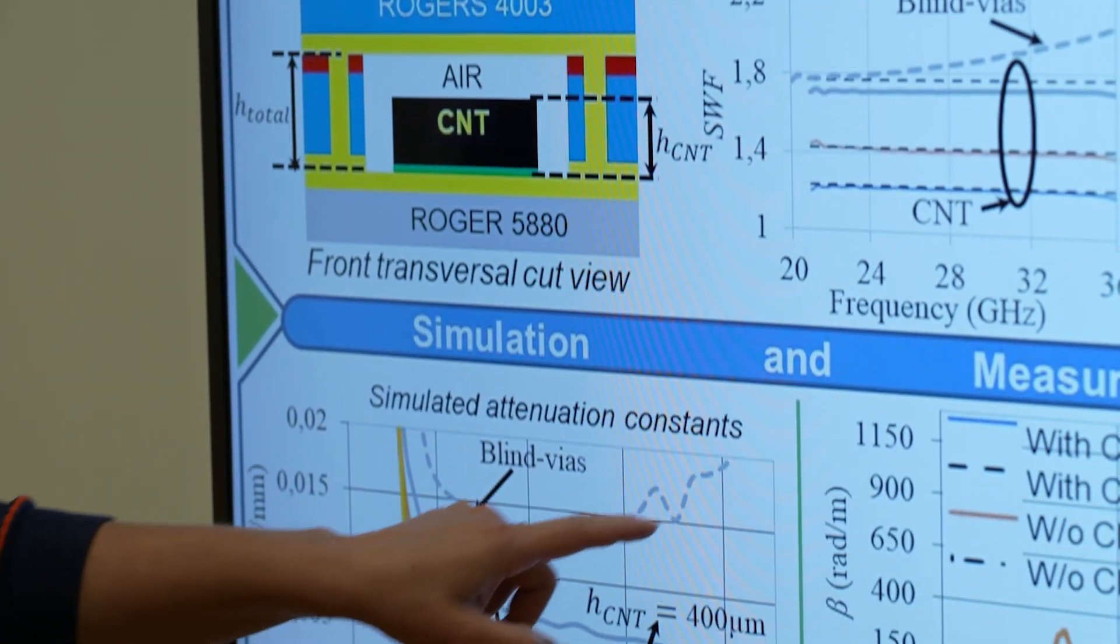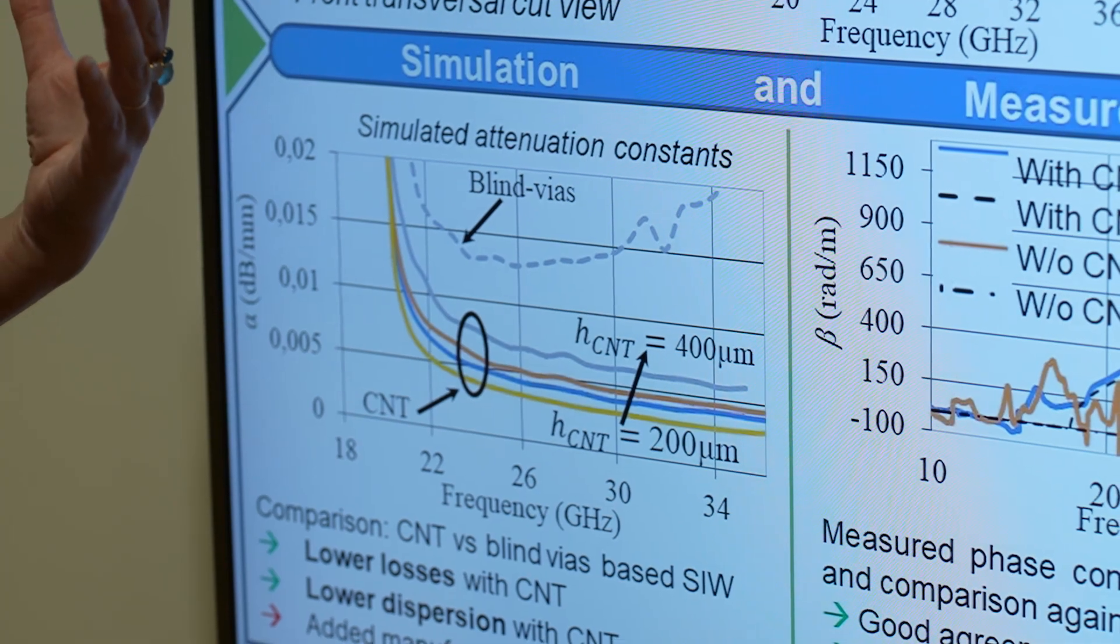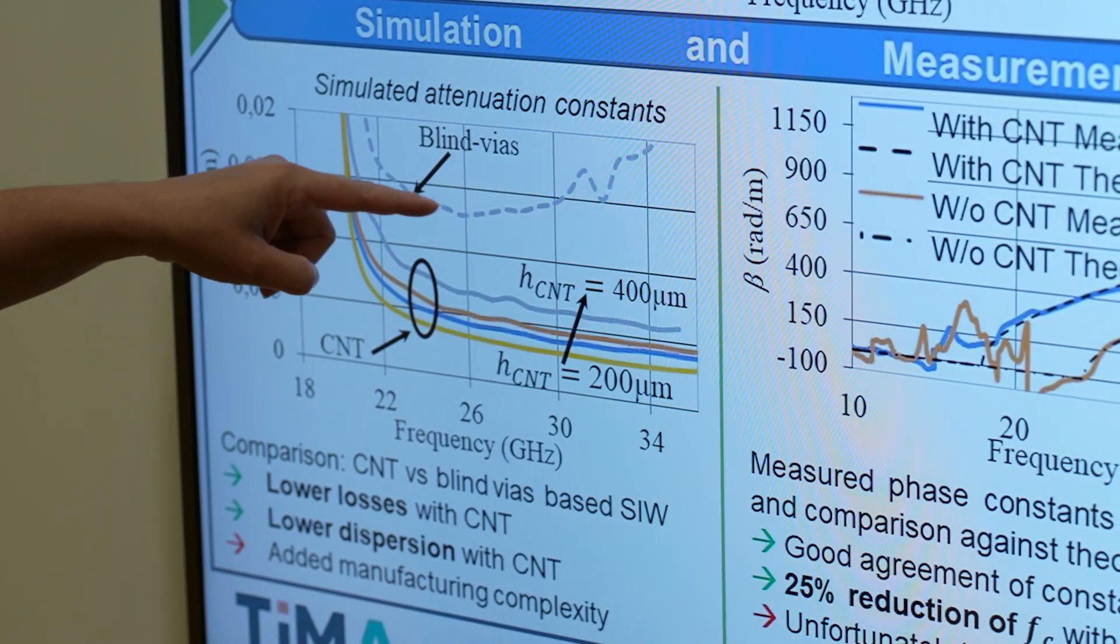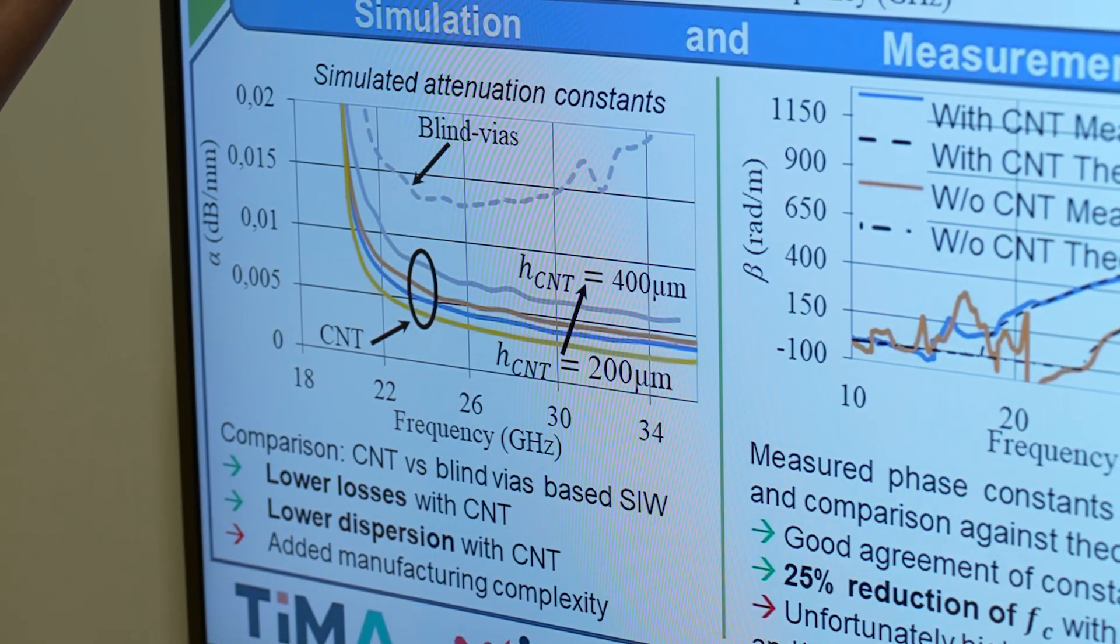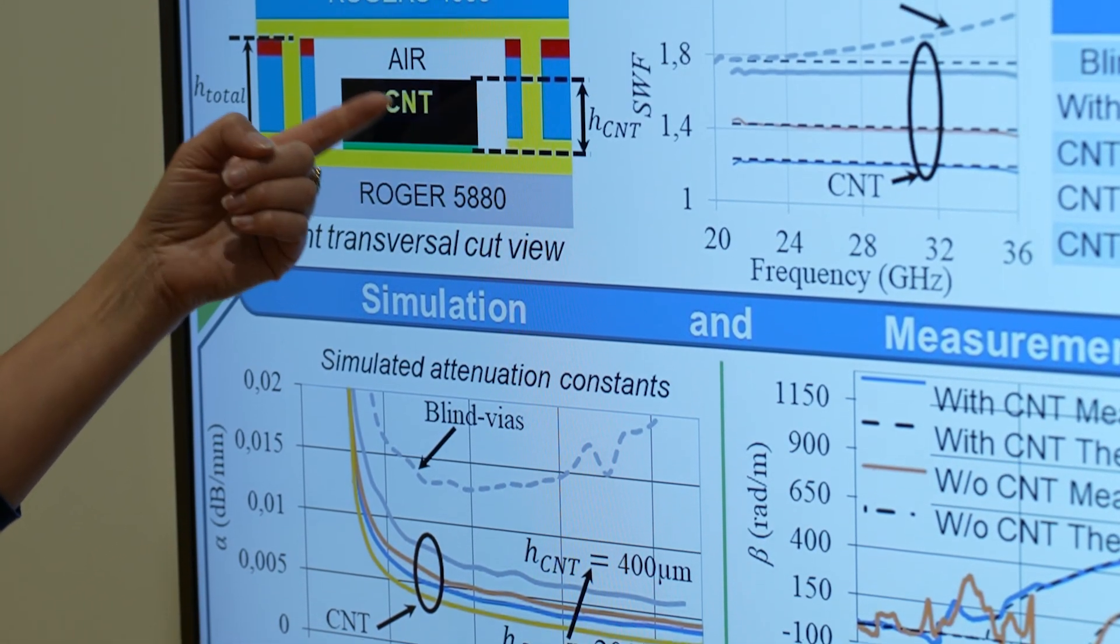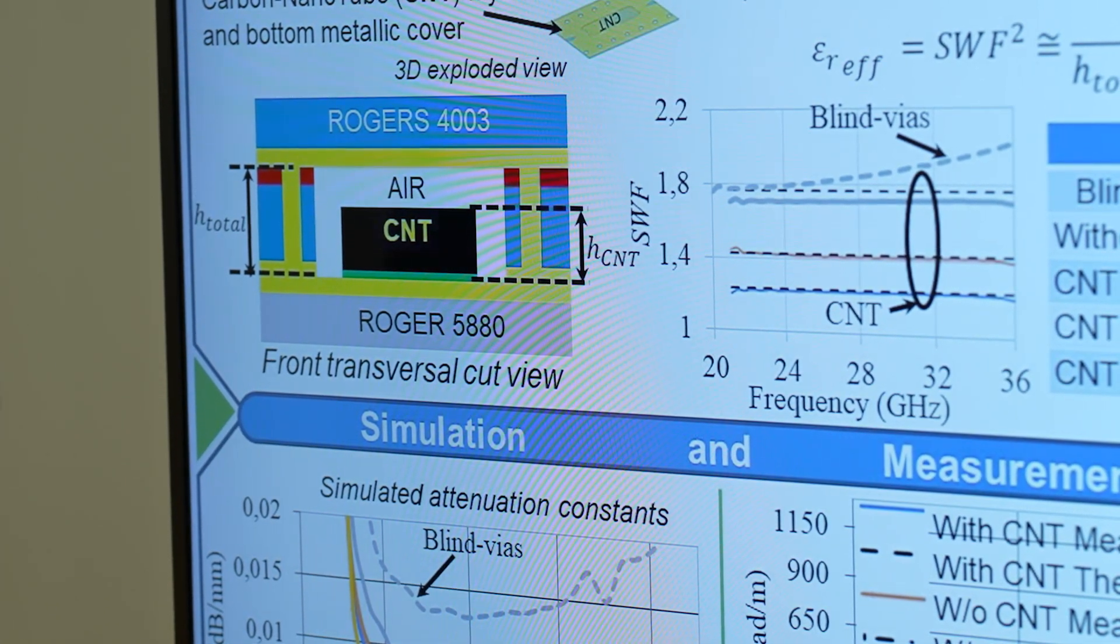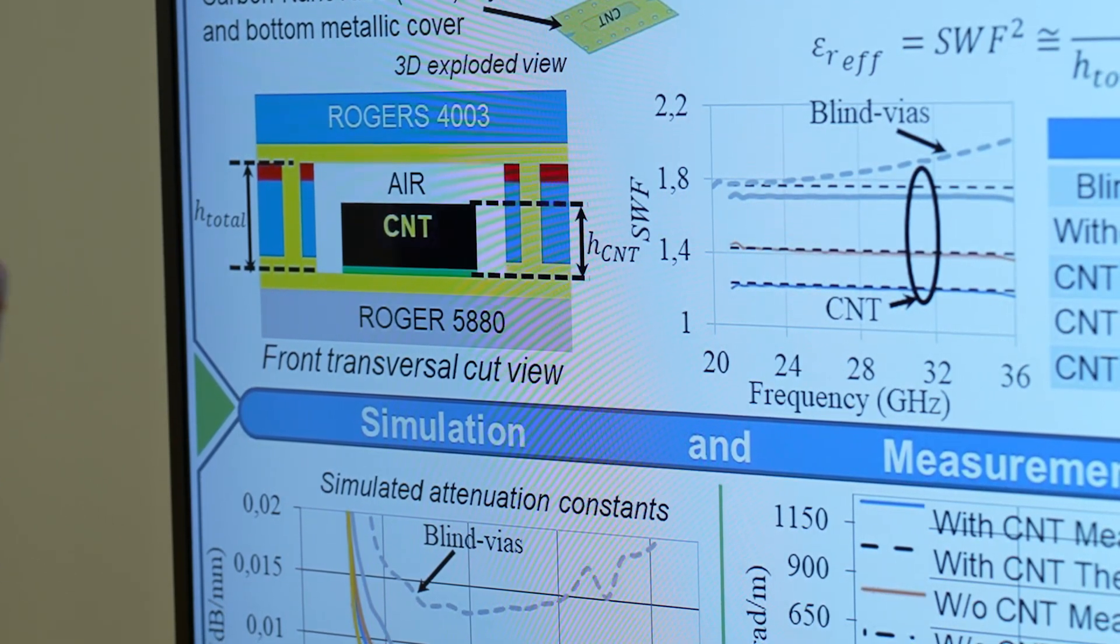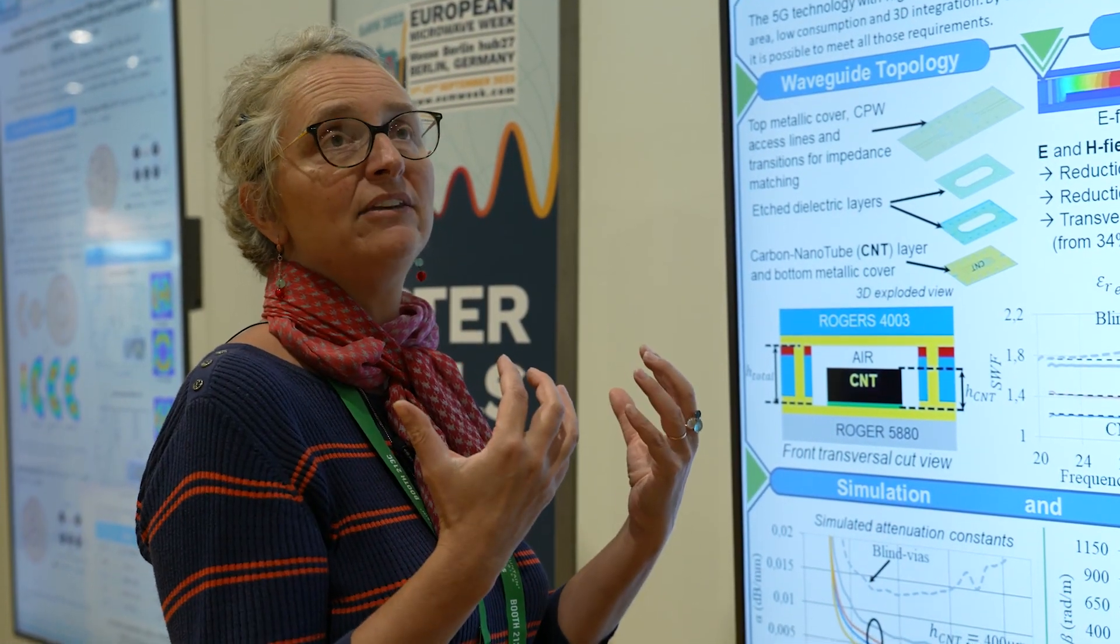Typically we have this curve here. The issue with blind vias is that they suffer from eddy currents, and so we have losses. Here we try to replace the blind vias by a forest of CNT, carbon nanotubes. Carbon nanotubes should be dense, with high conductivity, and above all, only axial conductivity. They have no transversal conductivity—this is their main interest.